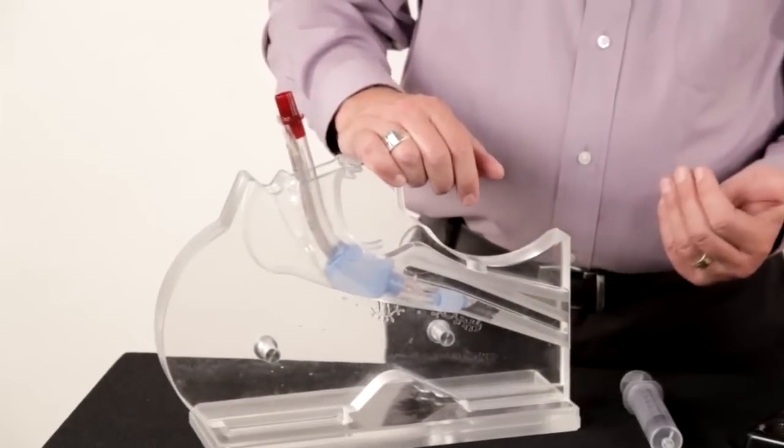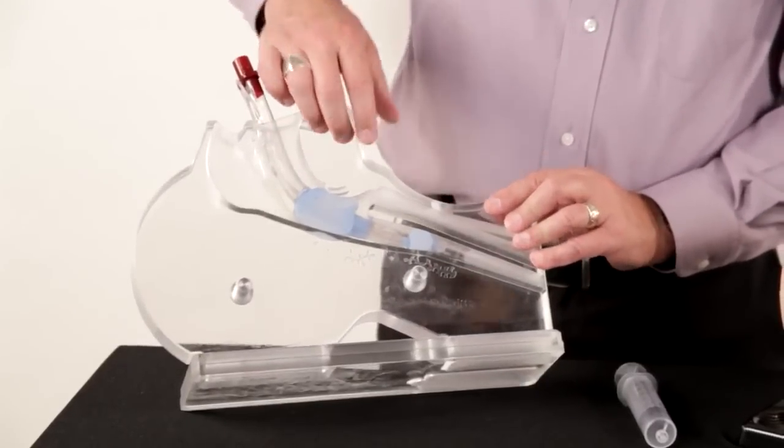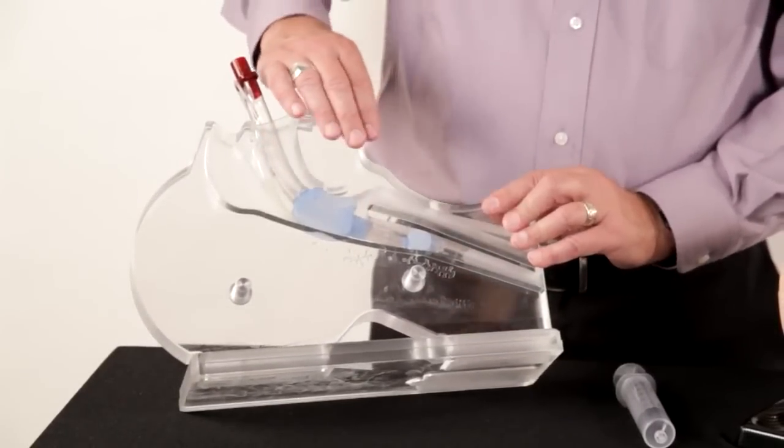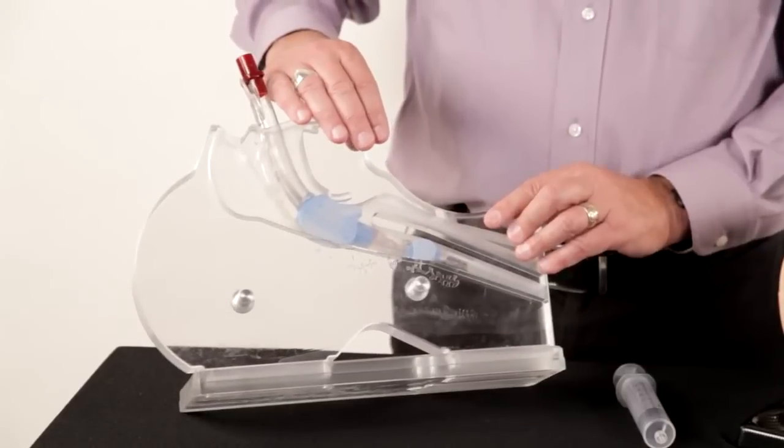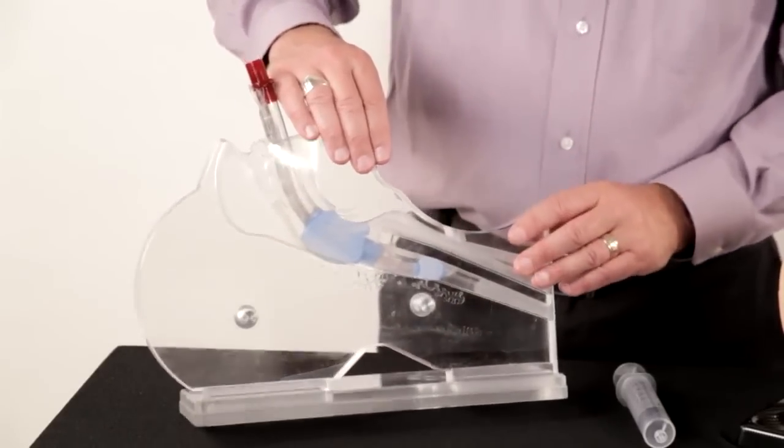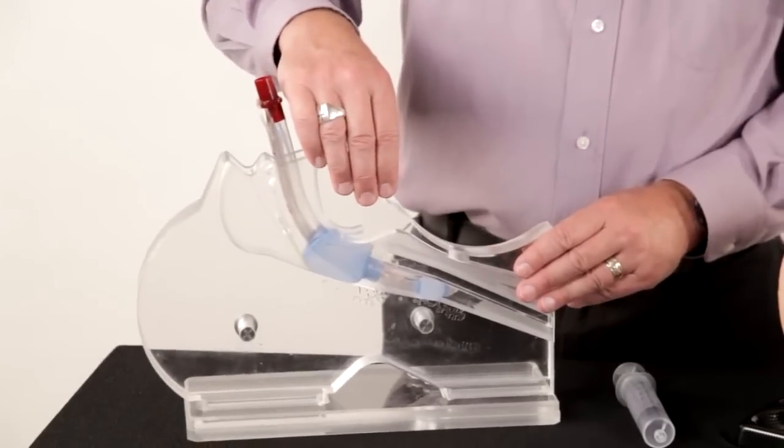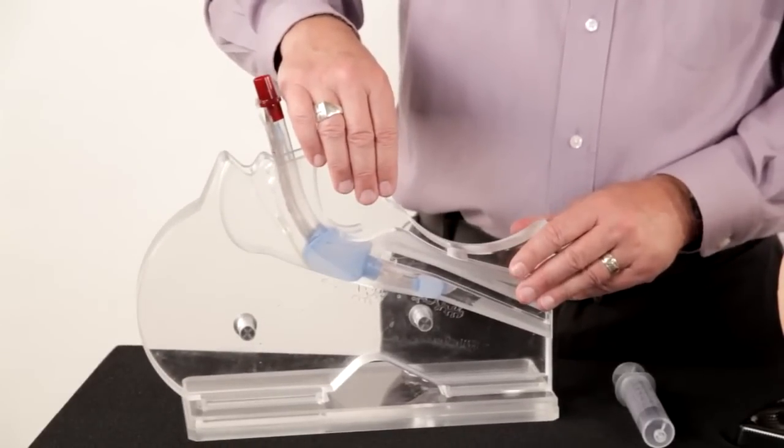As we saw, it gives a good ventilatory seal. There is a low likelihood of insufflation of gases into the stomach. And so clearly there is some protection against rising stomach contents. But no device actually prevents against aspiration, not even a tracheal tube.